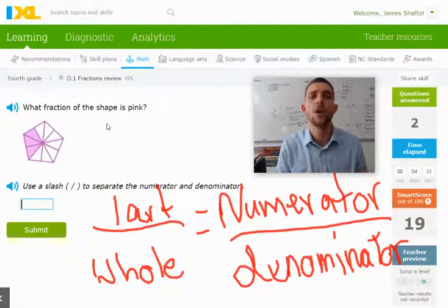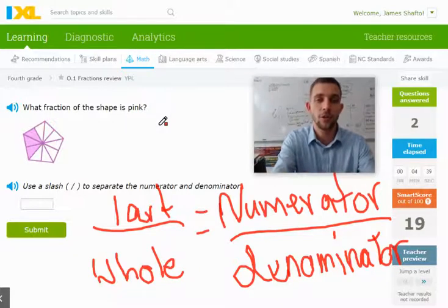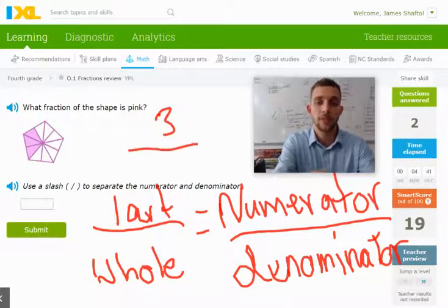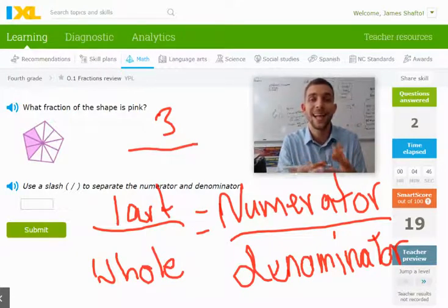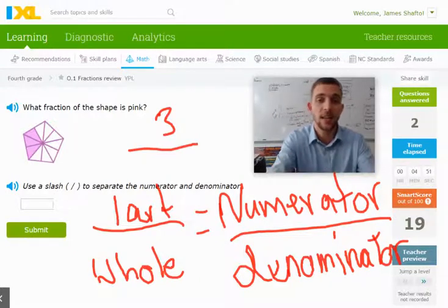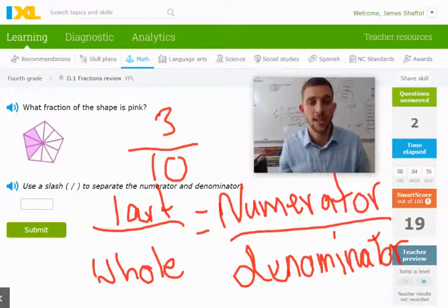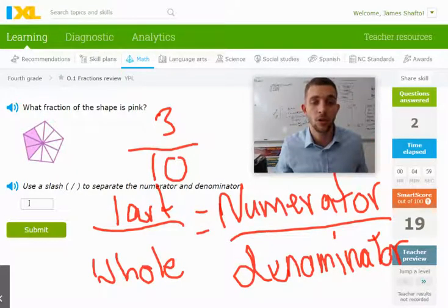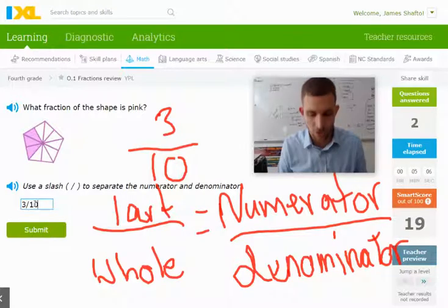Next, it asks, what fraction of the shape is pink? Again, we count the number of pink pieces, and there are three pink pieces, and then we count the total number of pieces to make a whole, and so we have three, six, nine, ten, and so our total is ten, or the denominator is ten, and so we are going to write three as the numerator, that's the part, and then ten as the denominator, which is the whole.